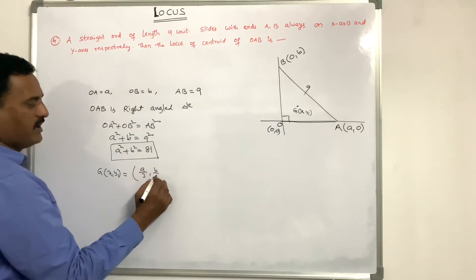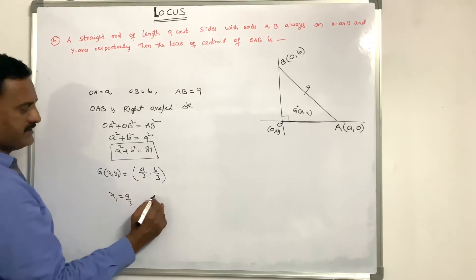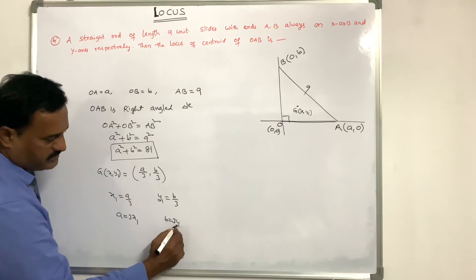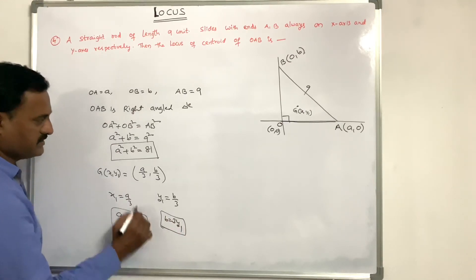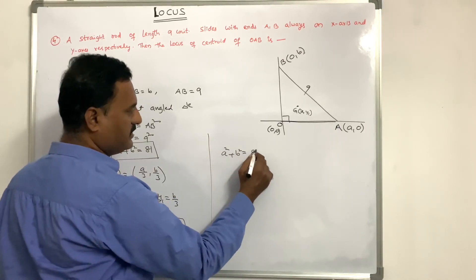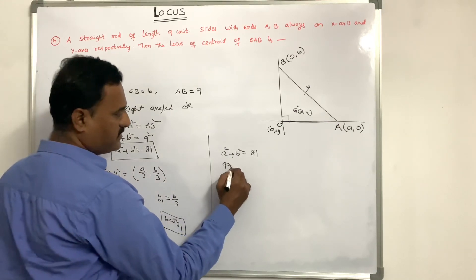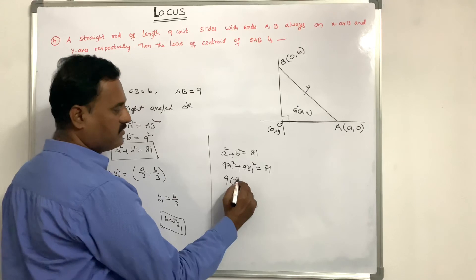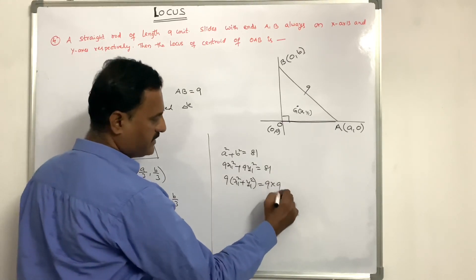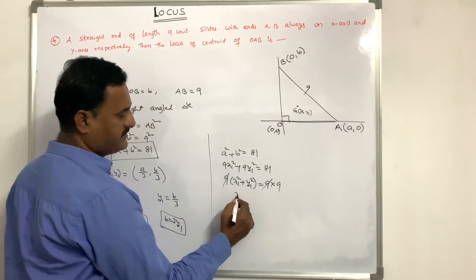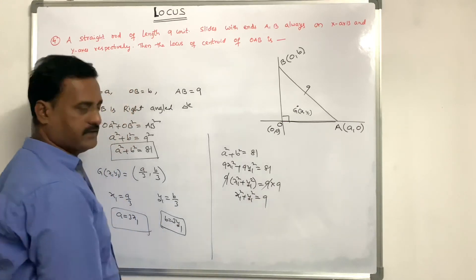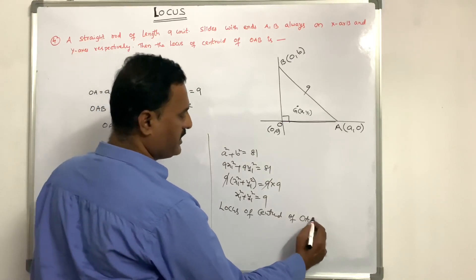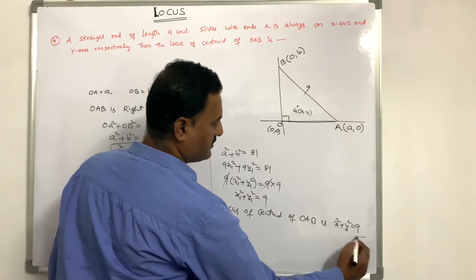The centroid of OAB is (a/3, b/3). So x1 = a/3 and y1 = b/3, giving a = 3x1 and b = 3y1. Substituting into a² + b² = 81: 9x1² + 9y1² = 81. Dividing both sides by 9: x1² + y1² = 9. Therefore, the locus of the centroid of OAB is x² + y² = 9.